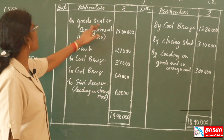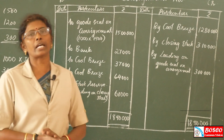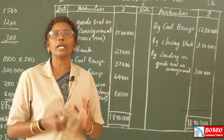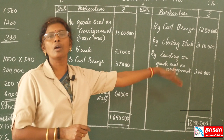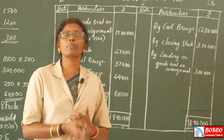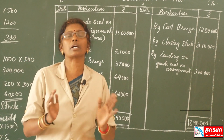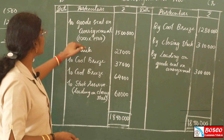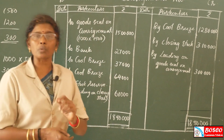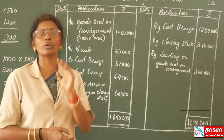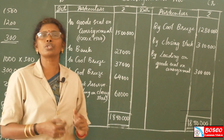First item in the consignment account: goods sent on consignment. 1000 units at invoice price of Rs.1500. We need to record at invoice price, not cost price. Goods sent on consignment: 1000 into Rs.1500 equals Rs.15,00,000. This is the goods sent on consignment entry.